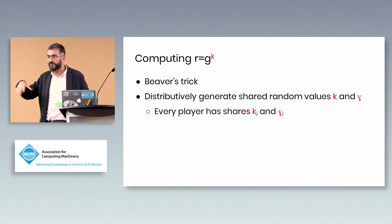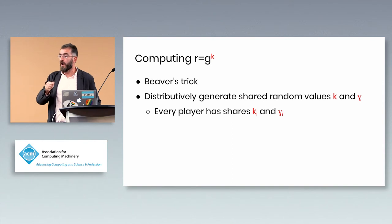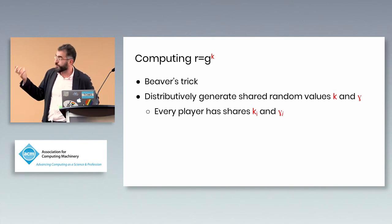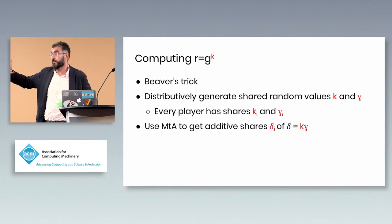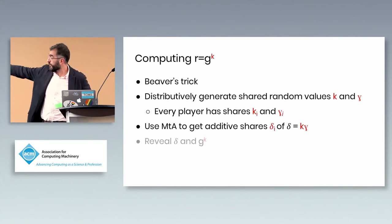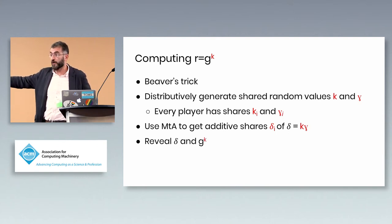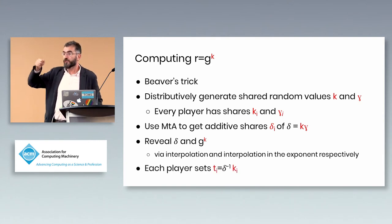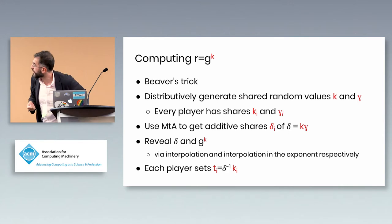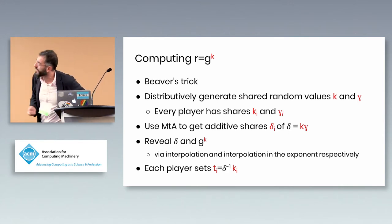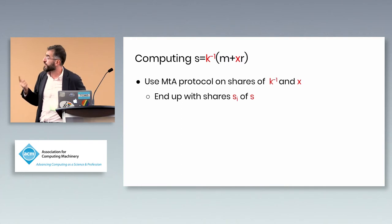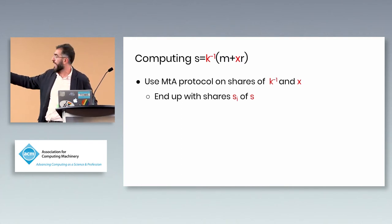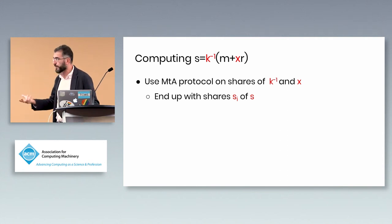The challenge is that we need shares of k^{-1} for the signature computation. To get this, we use the Beaver trick: generate another random number γ, use the multiplication protocol to get additive shares of kγ, reconstruct kγ in the clear, invert it in the clear as (kγ)^{-1}, then multiply by our shares of γ to obtain shares of k^{-1}.